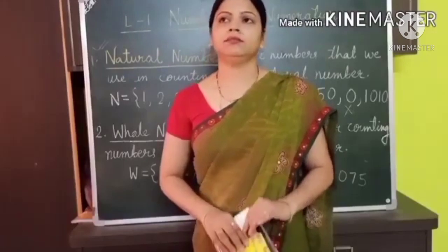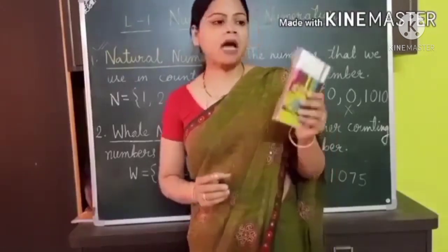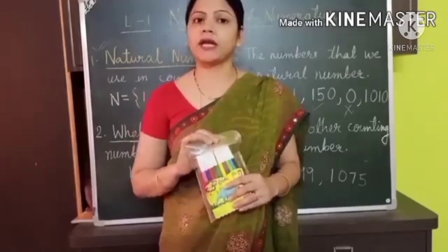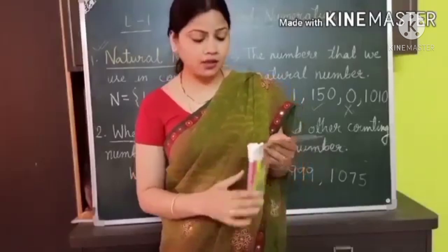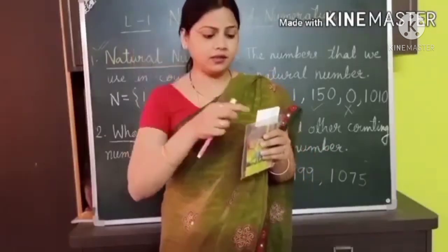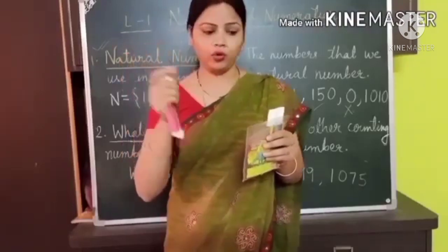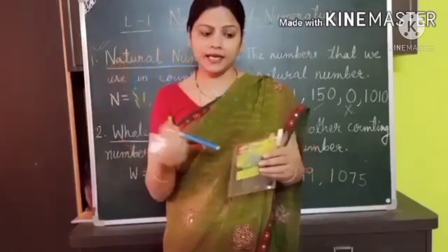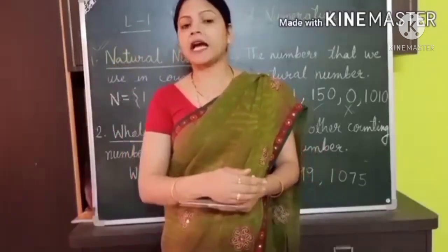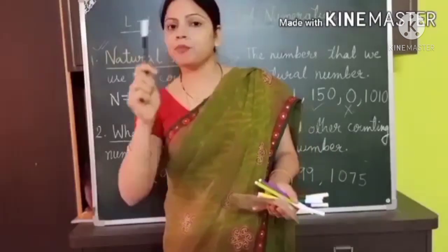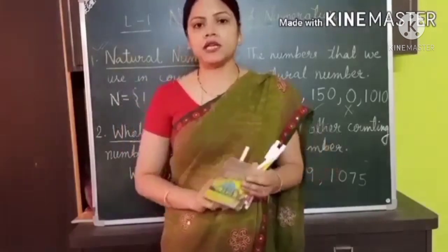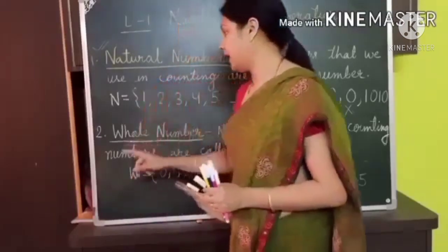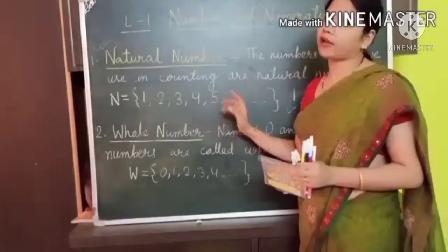What is a natural number? Any counting number. Suppose I have a packet of sketch pens and I want to know how many sketch pens I have. I have to start counting. From where will I start? 1, 2, 3, 4, 5, 6, 7, 8, 9, and 10. You have seen that I counted these sketch pens starting from 1. So any counting number starting with 1 is known as a natural number, and it is represented by N = 1, 2, 3, 4, 5, and so on.